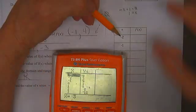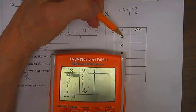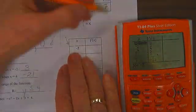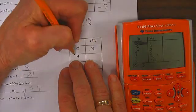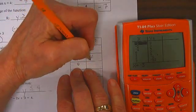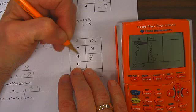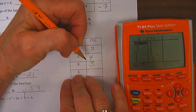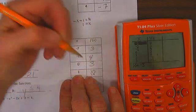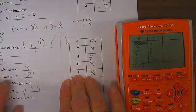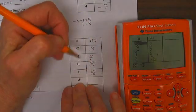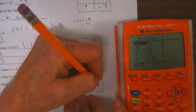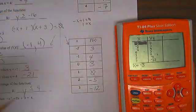When x is negative 2, y is 3. When x is negative 1, it is 4. When x is 0, y is 3. When it's 1, we have a 0. Good. When it's 2, negative 5. And when it's 3, negative 12.